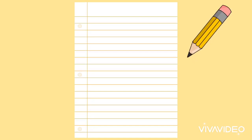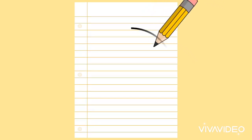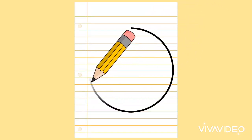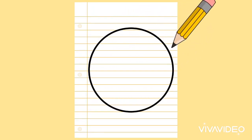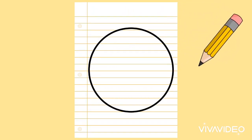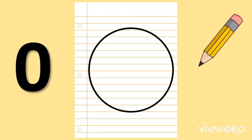What shape am I drawing? A circle. And how many corners does a circle have? That's right, no corners.